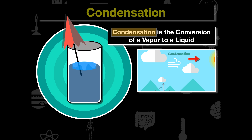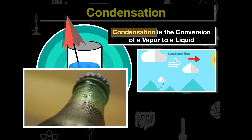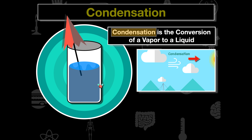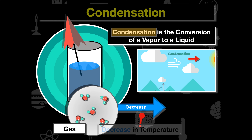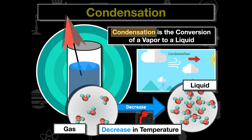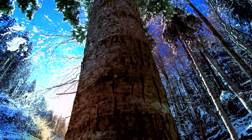Next is condensation. If you've ever had a glass of cold juice or water on a hot day, you've seen condensation — water molecules that are a vapor in the air come in contact with that cool glass and form on the outside. Condensation is the conversion of a vapor to a liquid: we decrease the amount of energy, decrease the vibrational pattern, and the molecules get closer together to form a liquid. Condensation is responsible for forming all the clouds we see in the atmosphere.